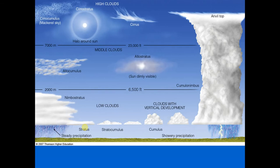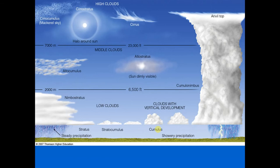Puffy cumulus clouds are those familiar fair-weather clouds that often resemble floating cotton candy or popcorn. The base appears white to light gray; on a humid day the base may be only a few thousand feet above the ground and individual clouds may be only a half mile wide. Cumulus clouds are generally more detached from each other than stratocumulus, and cumulus has greater vertical extent than stratocumulus.